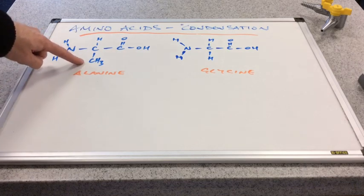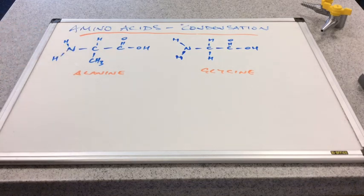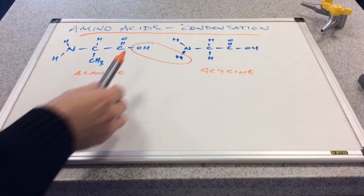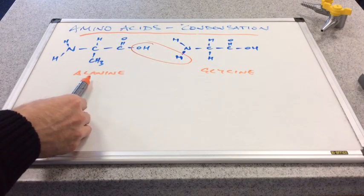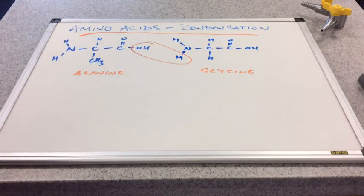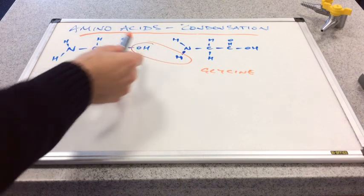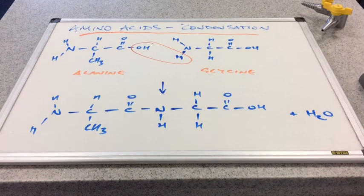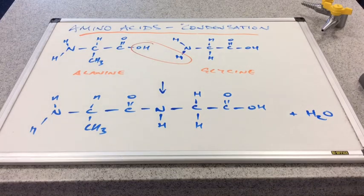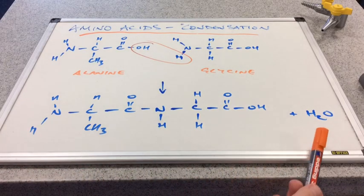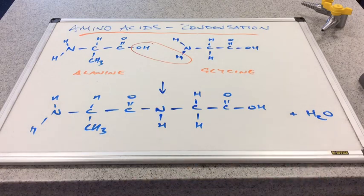So in alanine the R group is a methyl group and in glycine the R group is a hydrogen. So the way that I did that was I took the hydroxyl group from alanine and the hydrogen from the NH2 group on glycine and that gave me the water molecule for the condensation reaction. And there's the product of the reaction. So this is the larger molecule and obviously there's the smaller molecule, the water molecule.